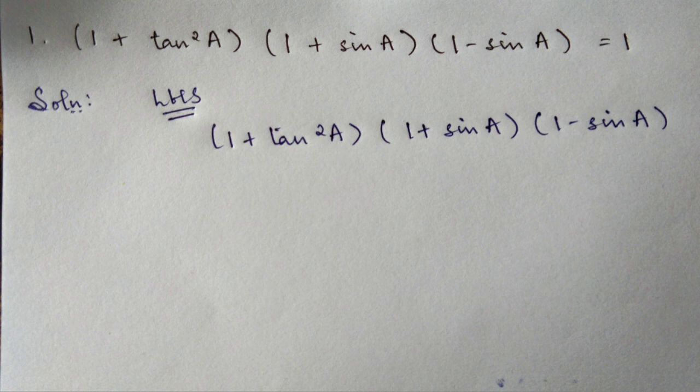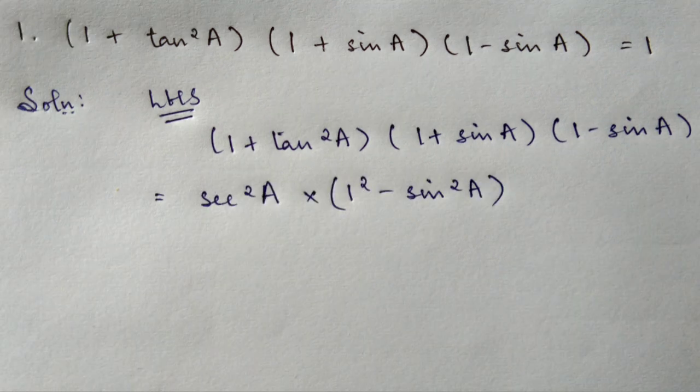Please do this before solving the question. Now we can see that in the question we have 1 plus tan square A. Direct substitution: convert 1 plus sin A into 1 minus sin A using A plus B into A minus B, giving A square minus B square, which is 1 plus tan square A.